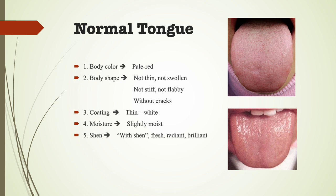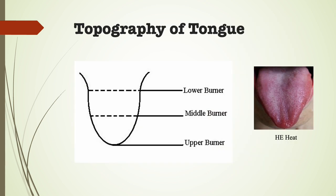This is the picture of a normal tongue. Body color should be pale red. Body shape: not thin, not swollen, not stiff, not flabby, without cracks. Coating should be thin and white. Moisture: slightly moist. The shen should be present — fresh, radiant, brilliant. The tongue, as with many other parts of the body, reflects the condition of the various internal organs, as seen in both the tongue's general appearance and changes in specific areas.